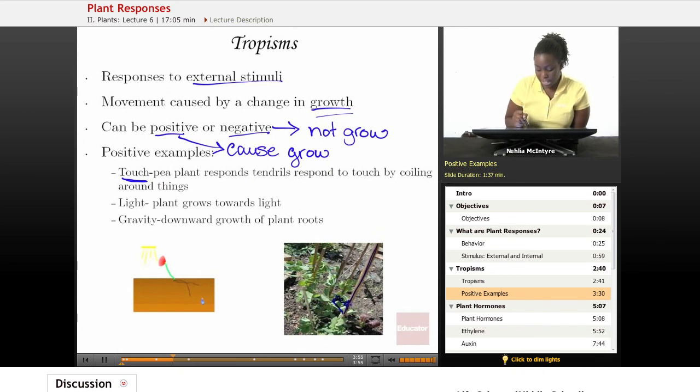Once it touches that stick, it actually wants to wrap its stem around that wooden stick. The pea plant responds to that touch by growing tendrils, and these tendrils coil around other things.